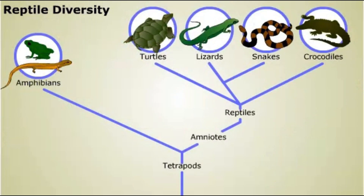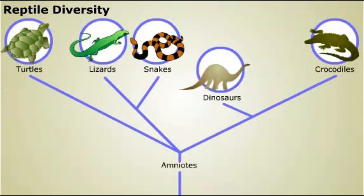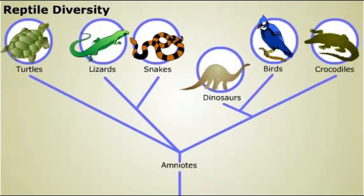The main groups of living reptiles are turtles, lizards, snakes, and crocodiles and their relatives. This traditional classification of reptiles excludes birds, a group of vertebrates that evolved special adaptations for flying. Biologists now recognize that birds descended from a group of dinosaurs during the Mesozoic era, and birds form a clade nested among the organisms traditionally classified as reptiles.